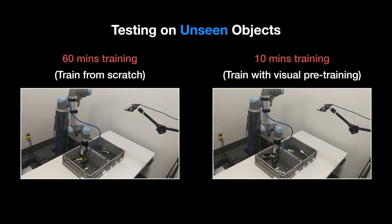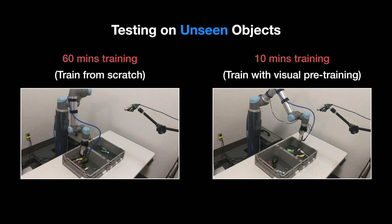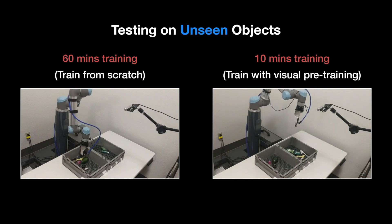To mitigate this problem, we propose a method to bootstrap our models with visual pre-training and show that it helps models generalize to unseen objects within 10 minutes of training.